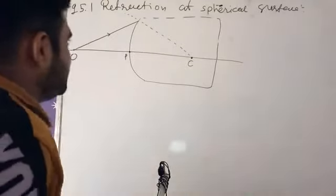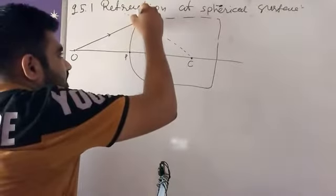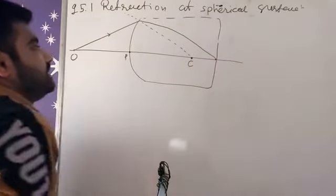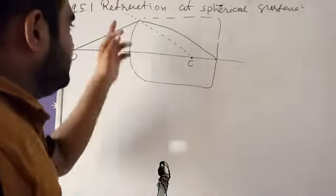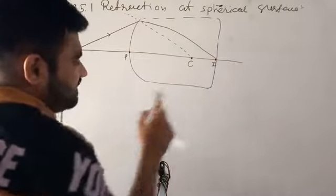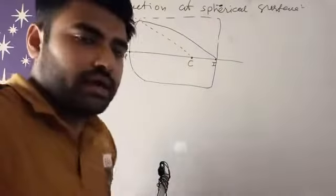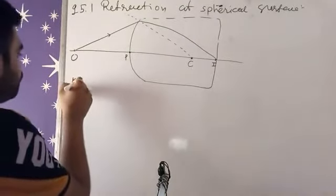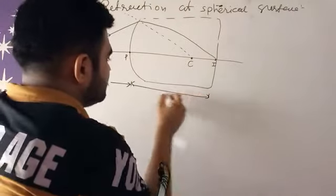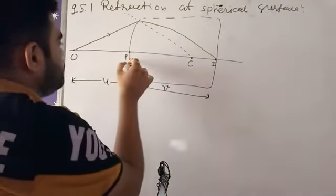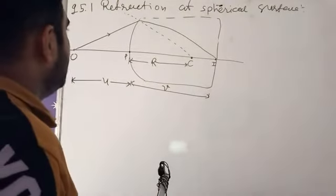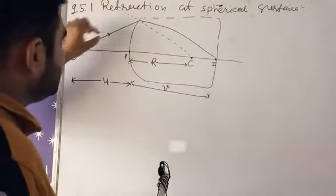The incident light hits this refracting surface and after refraction it propagates and forms an image at point I. So the distance from O to P is our object distance u, and from P to I is our image distance v. The distance from P to C is the radius of curvature, capital R.